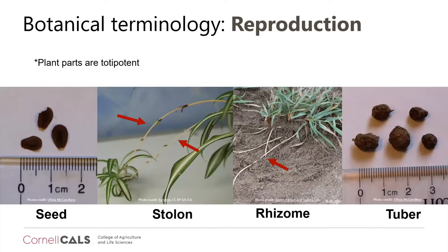The final botanical terminology section covers reproduction. One important concept: plant parts are totipotent — they have the ability to grow, divide, and differentiate into an entire plant from just a plant part, like when people take leaf cuttings and grow a whole plant from them. The main reproductive structures I'll discuss are seeds, stolons, rhizomes, and tubers.